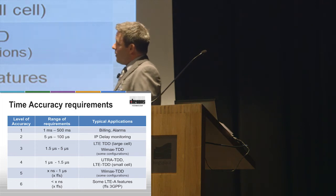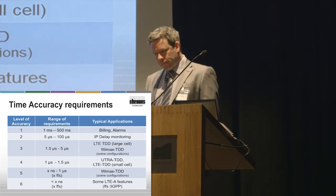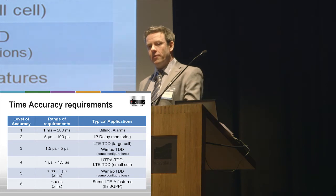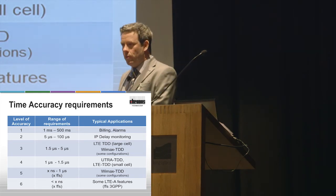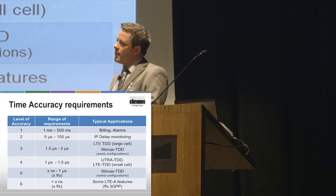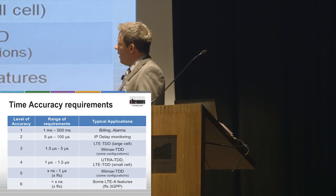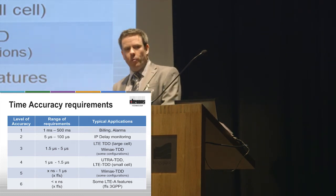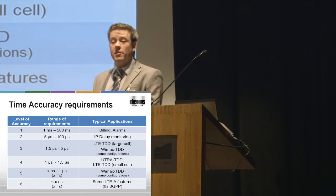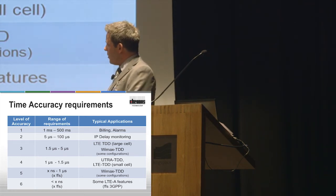The particular problem the ITU has been having is assembling these requirements from other standards bodies. The ITU standardization process has within it a liaison mechanism where they'll formally request information from other standards bodies, whether it's IEEE or 3GPP.